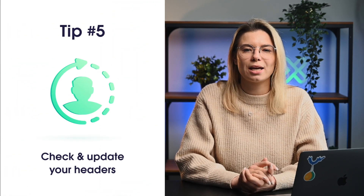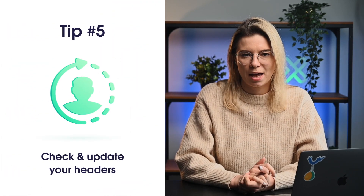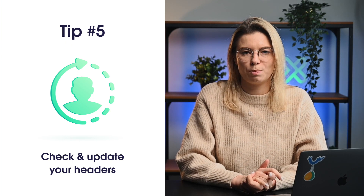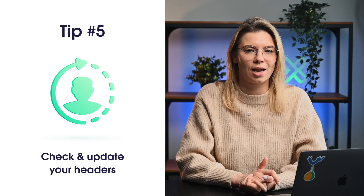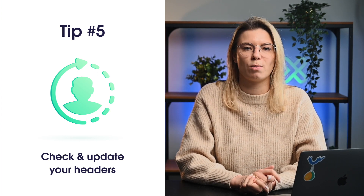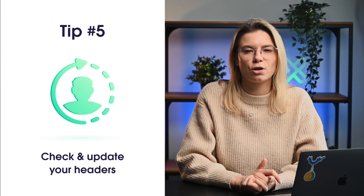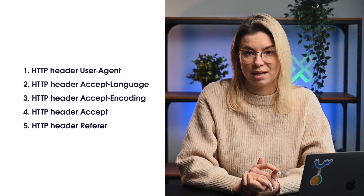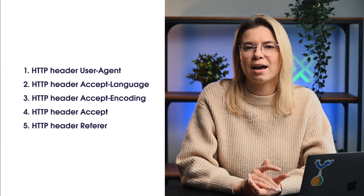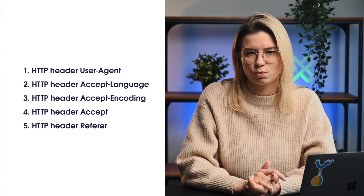Tip number 5 is to check and update your HTTP headers. An often overlooked tip is to optimize HTTP headers for web scraping. Most servers that host websites are capable of analyzing the headers of the HTTP requests scraping bots make, meaning it's easier for them to block suspicious activity. It's important to use up-to-date and optimized HTTP headers because it raises red flags if, for example, you're making requests with a 5-year-old user agent of a Firefox version that is no longer supported. Check our article linked in the video description for more information about the most common HTTP headers for web scraping.